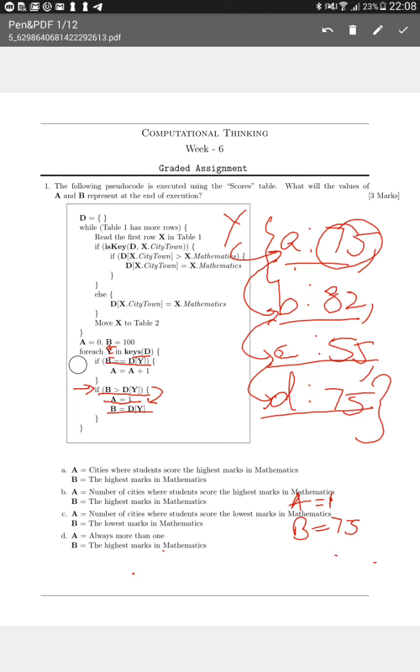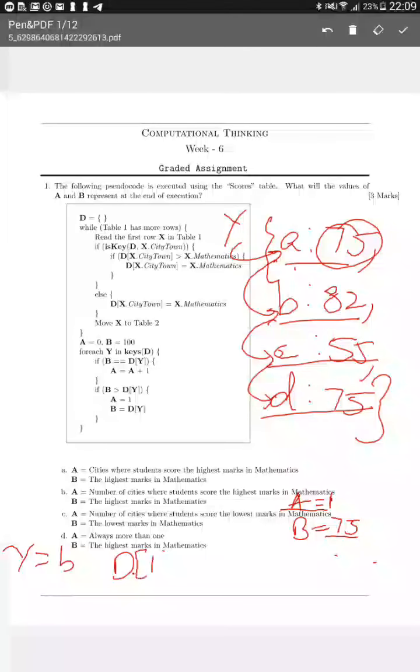In your second iteration, your value of B is 75 and your value of A is 1, and then you go into the second iteration. Here Y takes now the value of B, and we see that D[B] is actually 82.